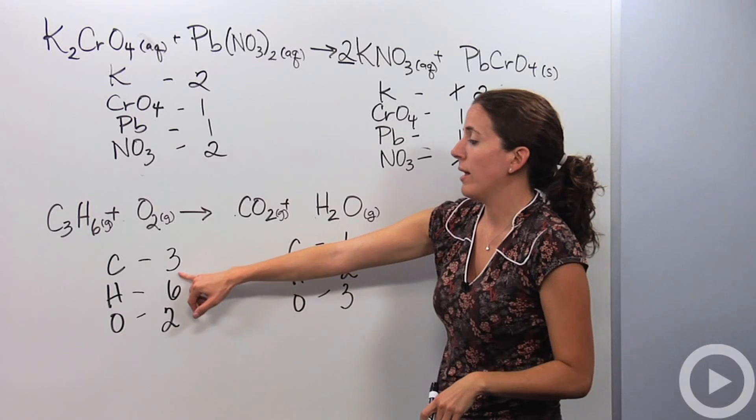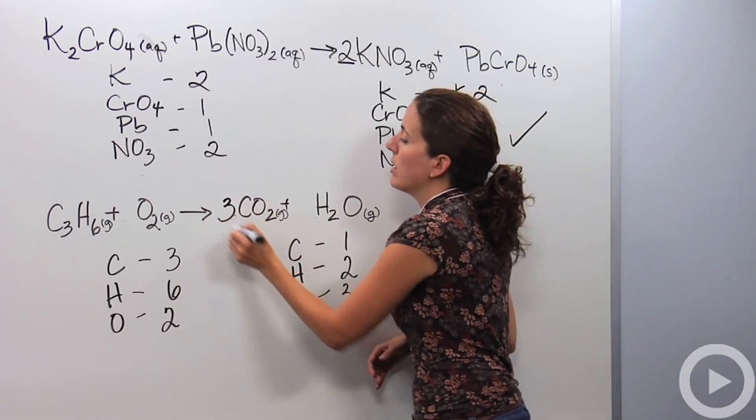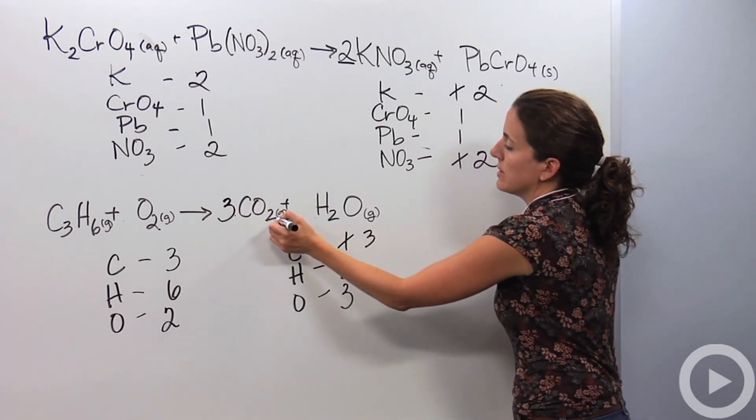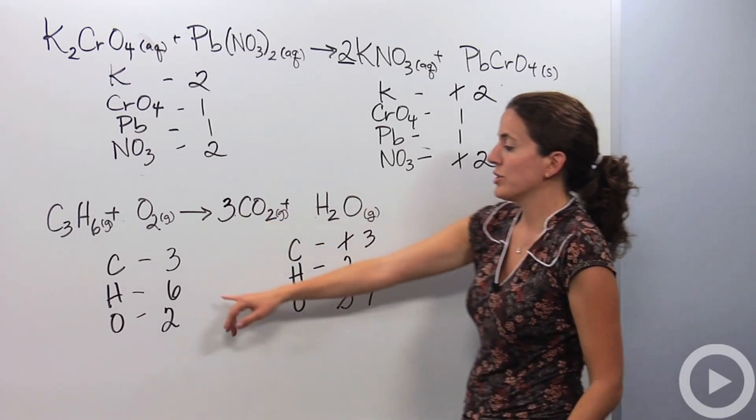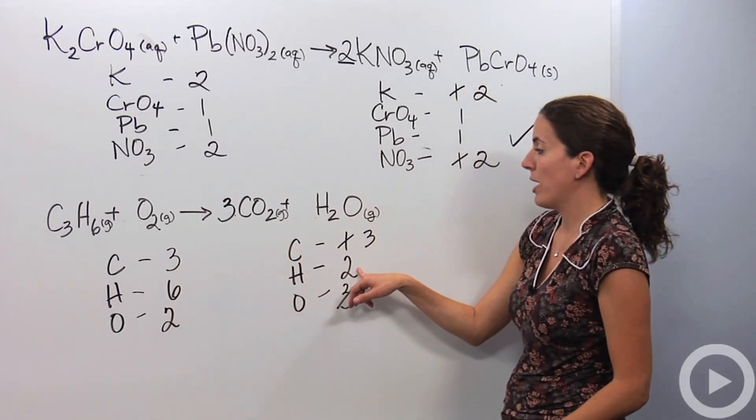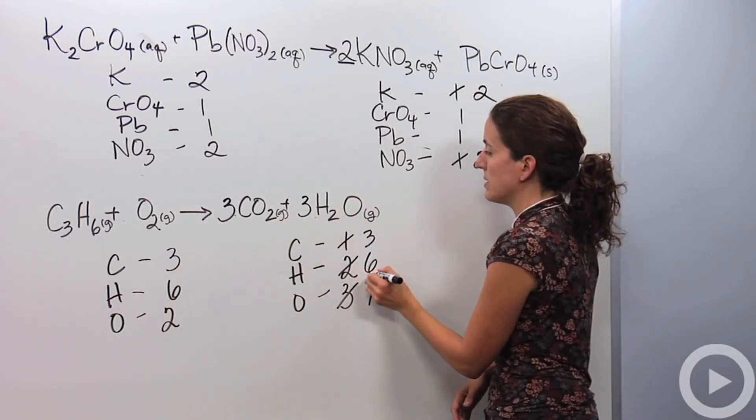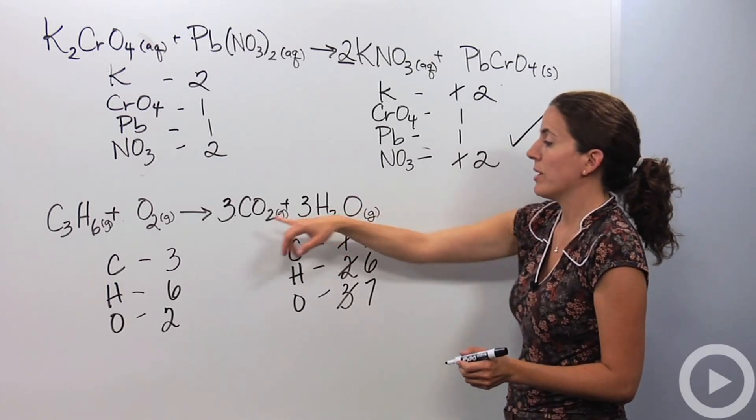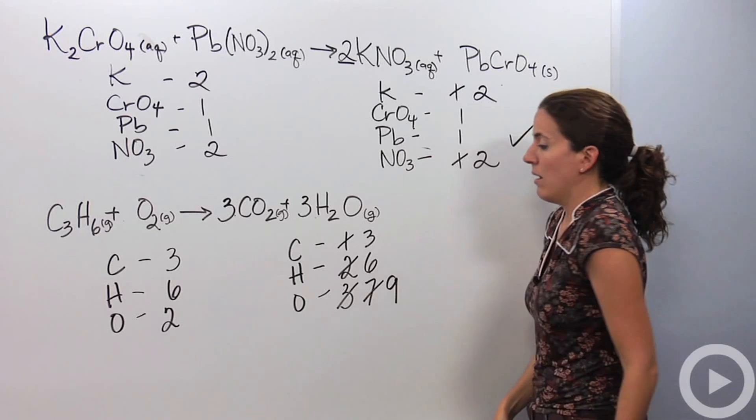So first things first, we want to balance our carbons. So we have three on the reactant side, one on the product side. I want to put a three in front, so that changes this to three. That changes this to six plus one is seven. Hydrogens, I have six on the reactant side, two on the product side. So I want to put a three here, making this six, but it also changes our oxygen. So we now have three plus six, which is nine.